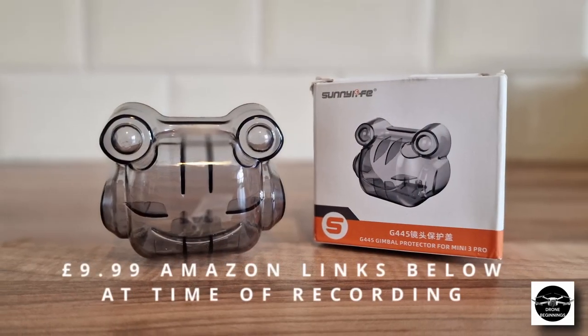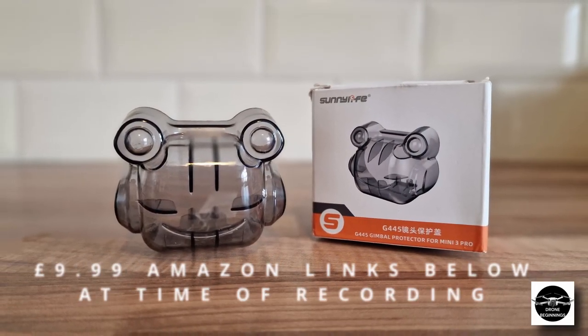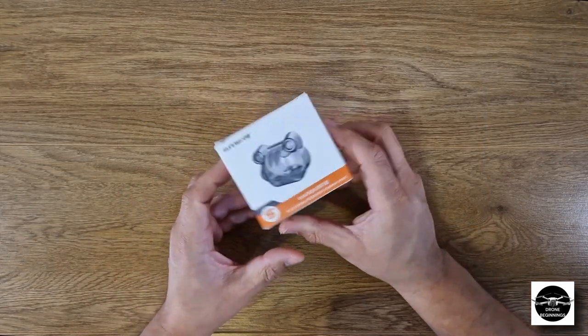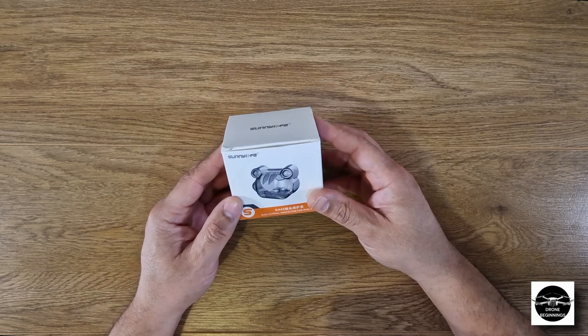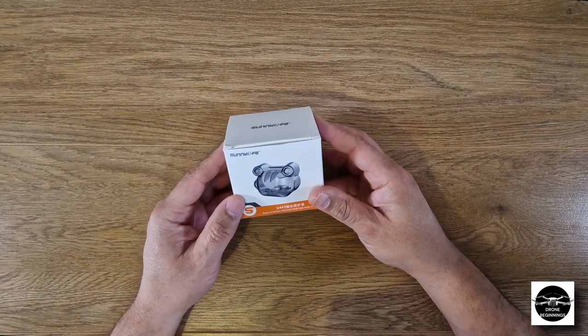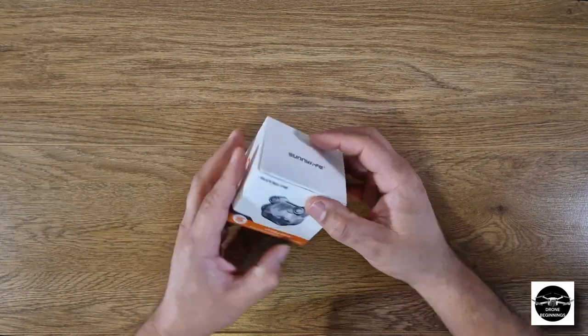Now number two we're going to have a look at here is Sunnylife. If you fly Mini Threes or Mini Twos, you're going to be very familiar with these. They are a cheaper brand and they are all over the market, but the products are good - can't knock them. Same as the generic one, that will certainly do the trick.